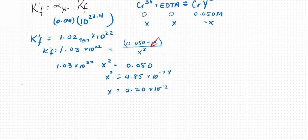Now what does X represent? X represents the concentration of the chromium. So the concentration of the chromium is this value, 2.20 times ten to the negative twelve.